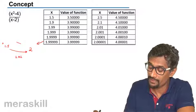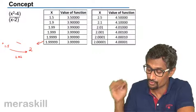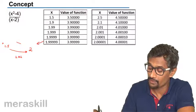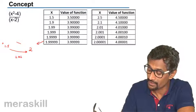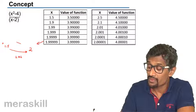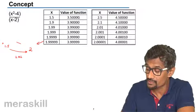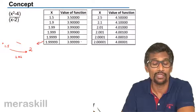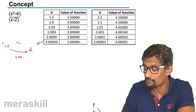At 1.5 you get 3.5, and when you substitute 1.9 in this function you get 3.9, and when you take 1.999 you get 3.99. But you see that the value of the function is going closer and closer towards four. That means the limiting value of the function is four.